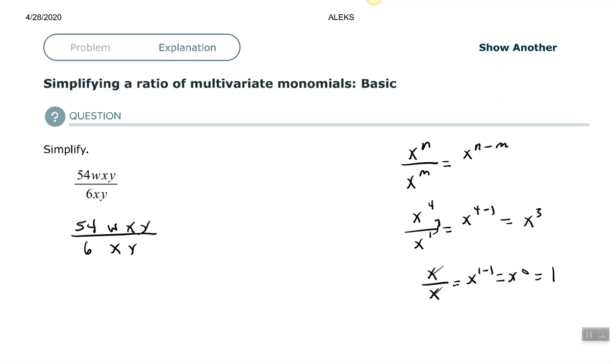We know that 6 will go into 54. So we're going to simplify that. Six will go into six one time, six will go into 54 nine times.